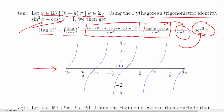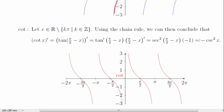Looking at the graph of tangent more closely, we see that its slope is never negative. That makes sense since the derivative is secant squared of x — something squared — and a square can never be a negative number.